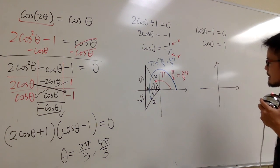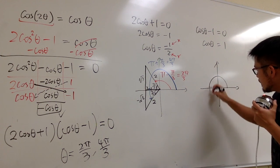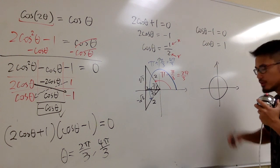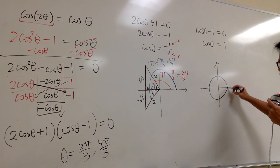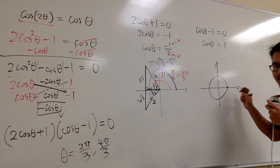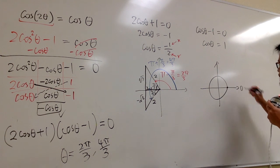So, if you look at the unit circle, cosine is the x value on the unit circle, right? And 1 is the x value, okay? And it's right here. And this right here is θ is equal to 0.